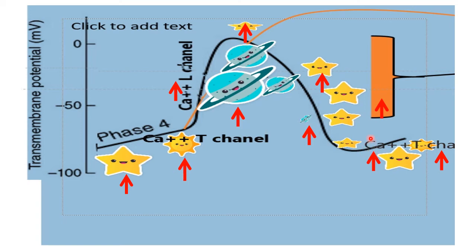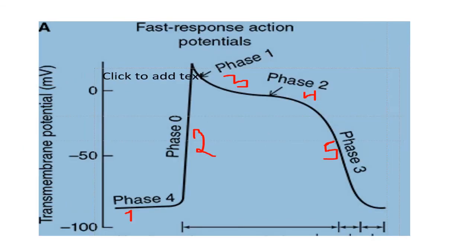After hyperpolarization, slight amounts of sodium and calcium ions enter through T-type channels, which are responsible for the slope of the unstable diastolic membrane potential. There is a clear difference between slow and fast response: fast response has a stable resting membrane potential, while slow response shows a gradual slope — it is not stable.